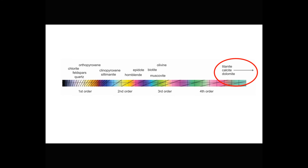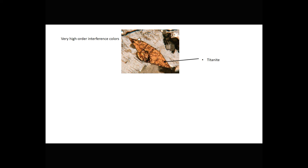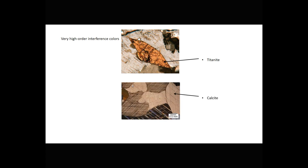Some minerals have such high birefringence that interference colors do not plot on any normal chart. Titanite, calcite, and dolomite are good examples. Here we see a grain of titanite — the birefringence is so high it's really hard to tell what the interference colors actually are. If we wanted to plot titanite's birefringence on the chart, the chart would have to be three times wider. Titanite often shows this classic wedge shape called a sphenoid shape, and the old name of titanite was sphene. Calcite has even greater birefringence than titanite, and both have extremely high-order interference colors — so high that we can't even estimate what order they are, and sometimes these colors appear almost white.